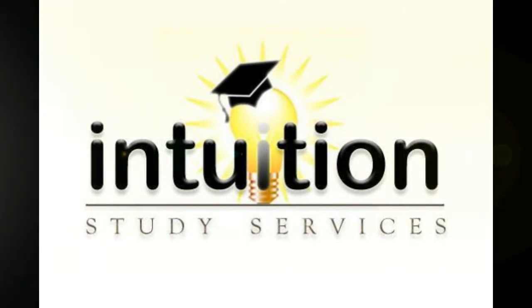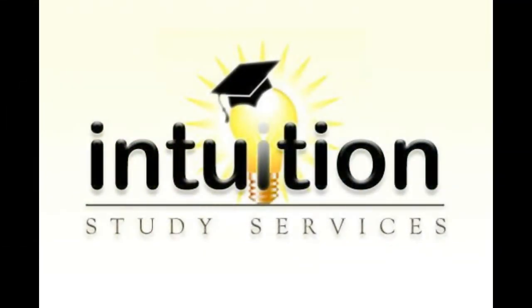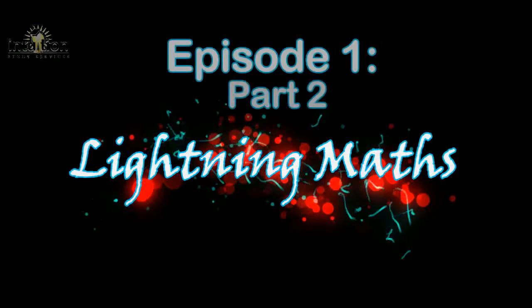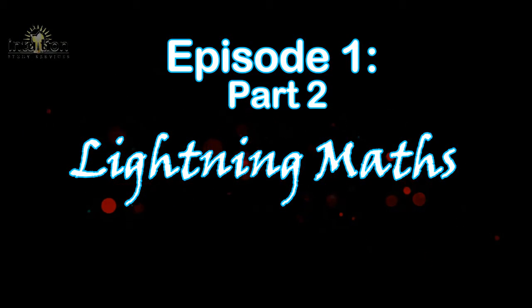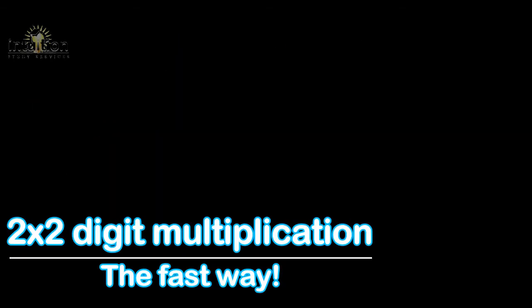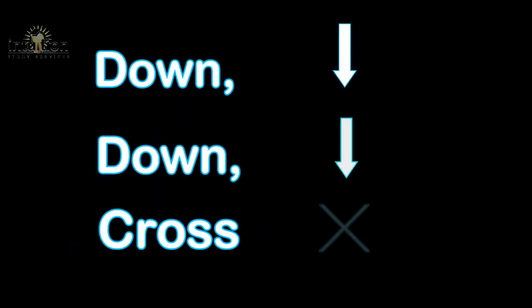Hi guys, and welcome to Intuition Study Services. In today's episode, we'll be looking at another variation of lightning maths, the quickest, fastest, and easiest way to multiply two two-digit numbers together. This will be done using the down-down-cross method. So, let's take a look.